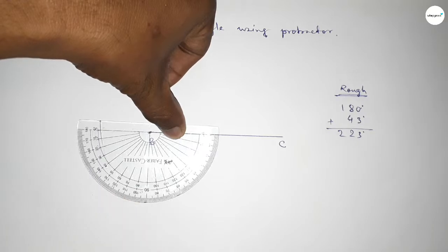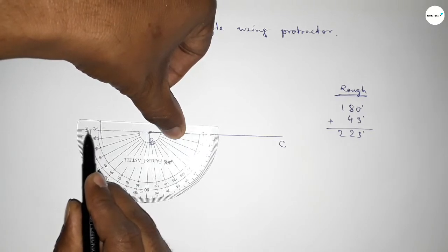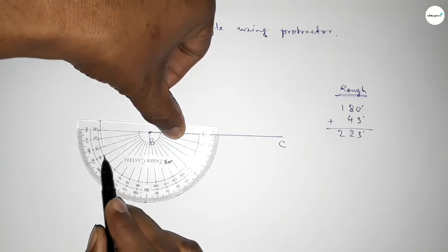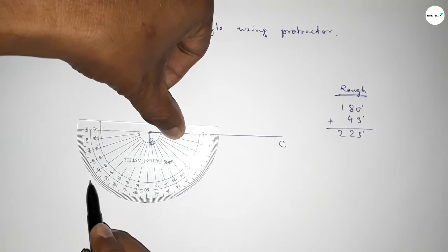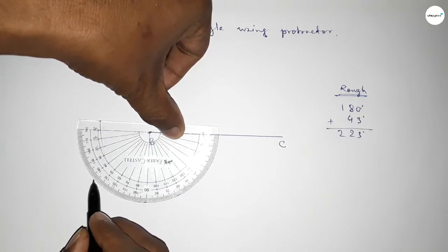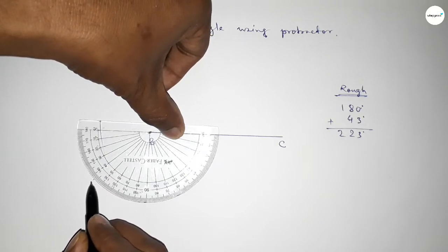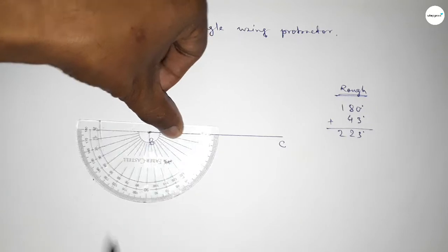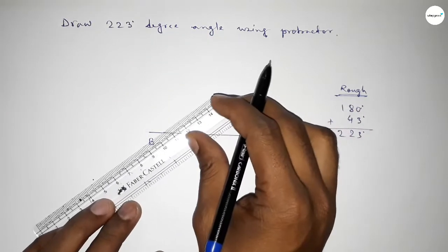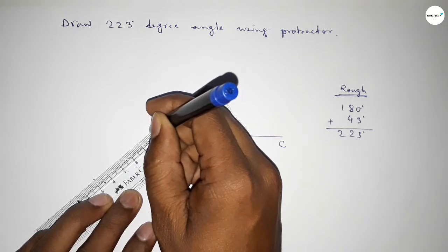So this is 180 degrees and this is also starting angle: 0, 10, 20, 30, 40, 41, 42, 43. So this is 43-degree angle. So by adding 43-degree angle with 180 degrees, then we can get 223 degrees.